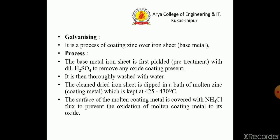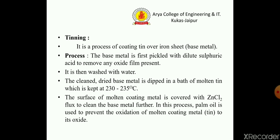The first hot dipping method is the galvanizing process — it is a process of coating zinc on an iron sheet. In this process, the base metal iron sheet is first pre-treated with dilute acid to remove oxide films, and then thoroughly washed with water. Next, the clean dry iron sheet is dipped in a bath of molten zinc kept at 425–430°C. The surface of the molten coating metal is covered with NH₄Cl flux to prevent oxidation of the molten coating metal to its oxide.